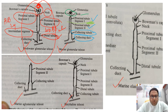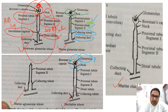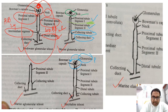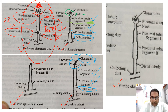In the ureohaline teleost, the main differentiating feature is that the glomerulus is very small and poorly vascularized. There is a ciliated neck segment, first and second proximal segments, a ciliated tubule, a distal tubule, and a collecting duct.